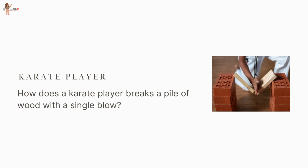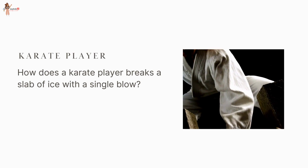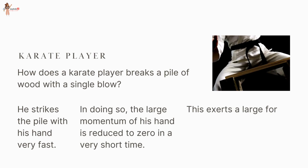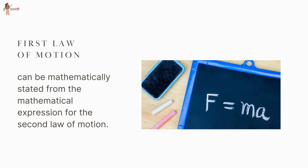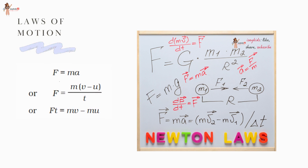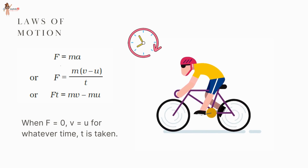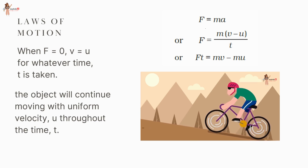A karate player breaks a pile of wood with a single blow by striking it with his hand very fast. The large momentum of his hand is reduced to zero in a very short time, exerting a large force on the pile sufficient to break it apart. The First Law of Motion can also be mathematically derived from the Second Law: F = ma = m(v − u)/t. When F = 0, v = u for whatever time t is taken — meaning the object continues moving with uniform velocity u. If u = 0, then v = 0 as well — the object remains at rest.